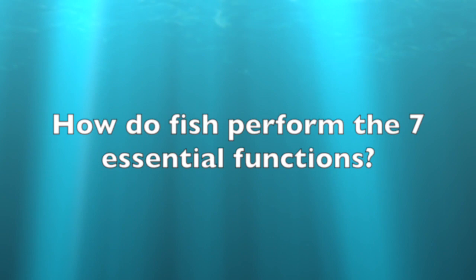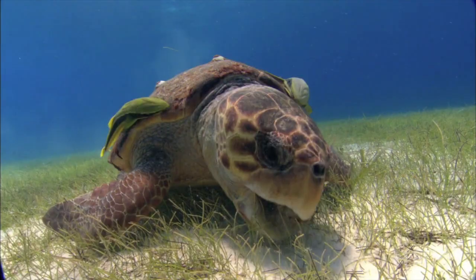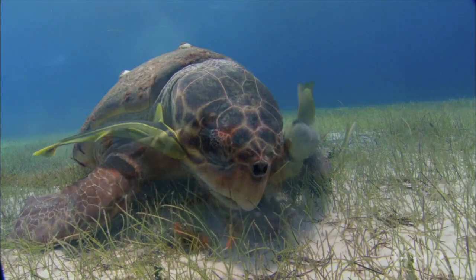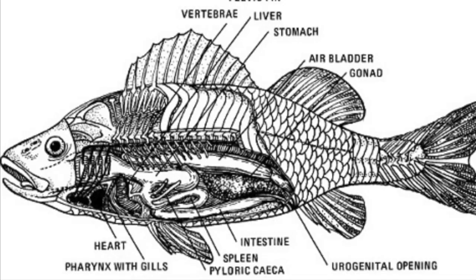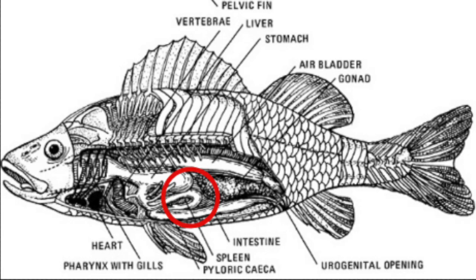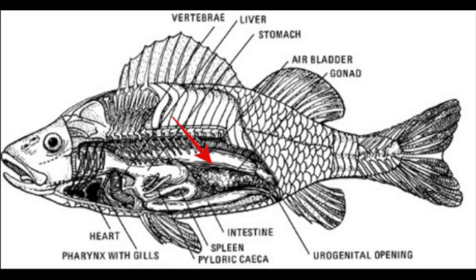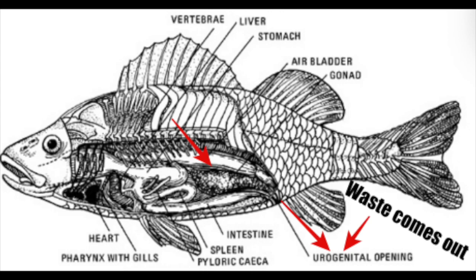The first essential function we'll discuss is feeding. The food goes down to where it is further processed in finger-like pouches called pyloric ceca. The pyloric ceca produces and discharges digestive enzymes and absorbs nutrients from digested food. Their intestines complete the process of digestion and nutrient absorption.